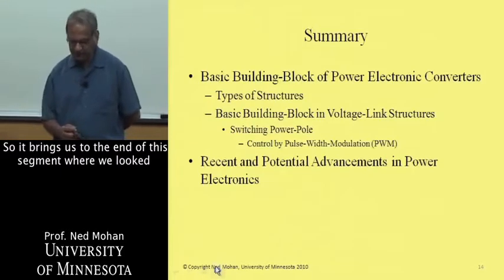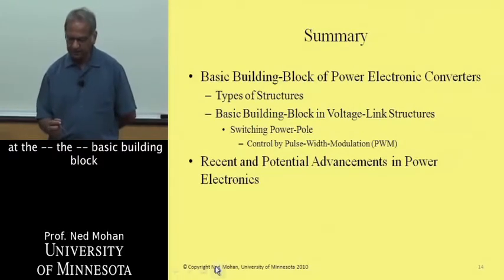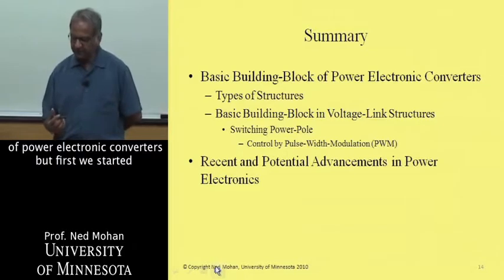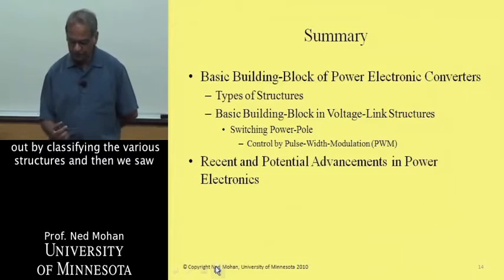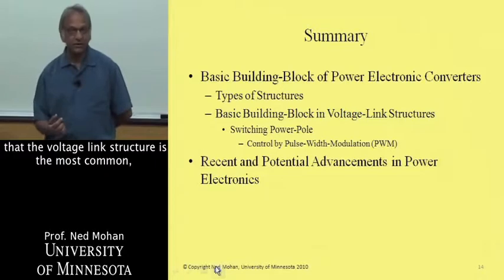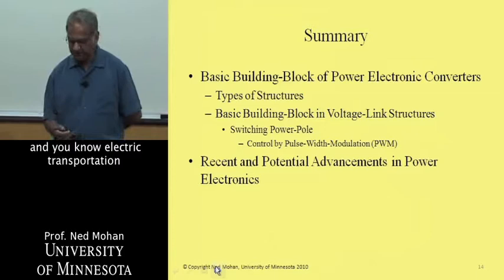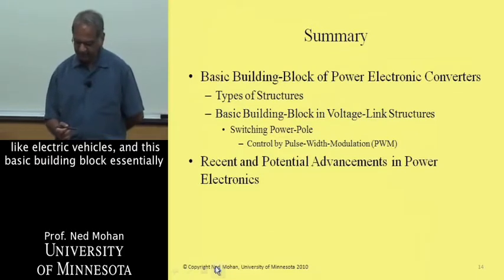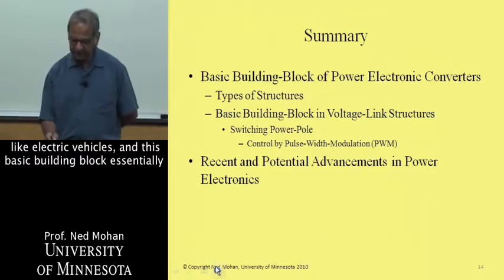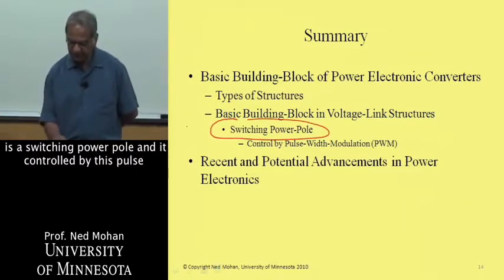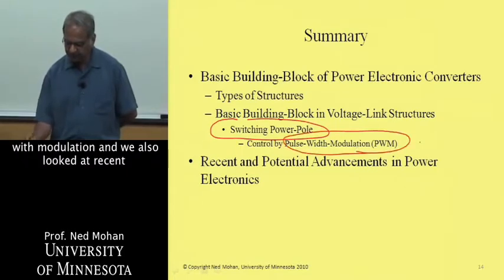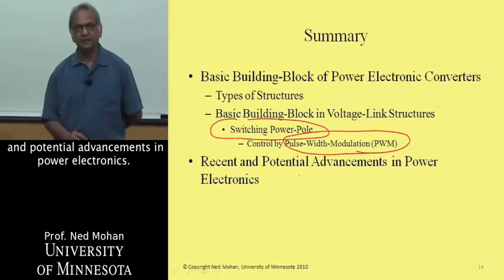So, it brings us to the end of this segment where we looked at the basic building block of power electronic converters. But first, we started out by classifying various structures, and then we saw that the voltage link structure is the most common, for example, used in wind turbines, photovoltaic systems, and, you know, electric transportation, like electric vehicles. And this basic building block essentially is a switching power pole, and it's controlled by this pulse width modulation. And we also looked at recent and potential advancements in power electronics. Thank you very much.